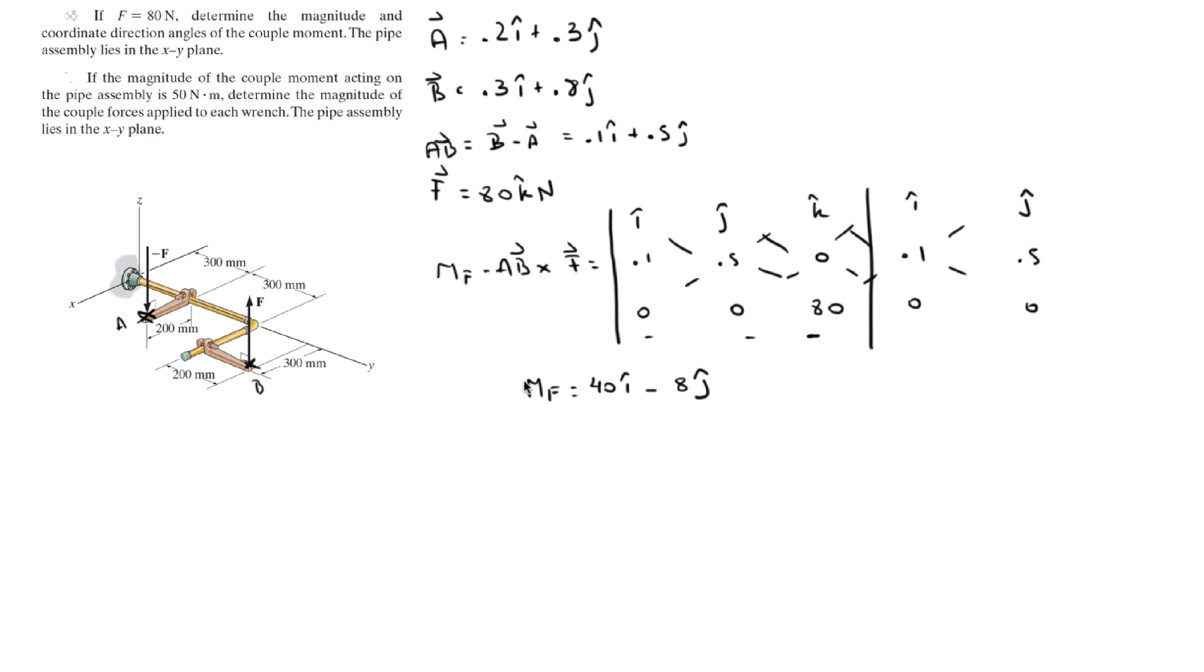So, this is the Cartesian vector form of the moment created by the couple moment. To find the magnitude, all you need to do is 40 squared plus 8 squared, all that square rooted, and that gives you 40.8. This is newton meters. Simple enough.